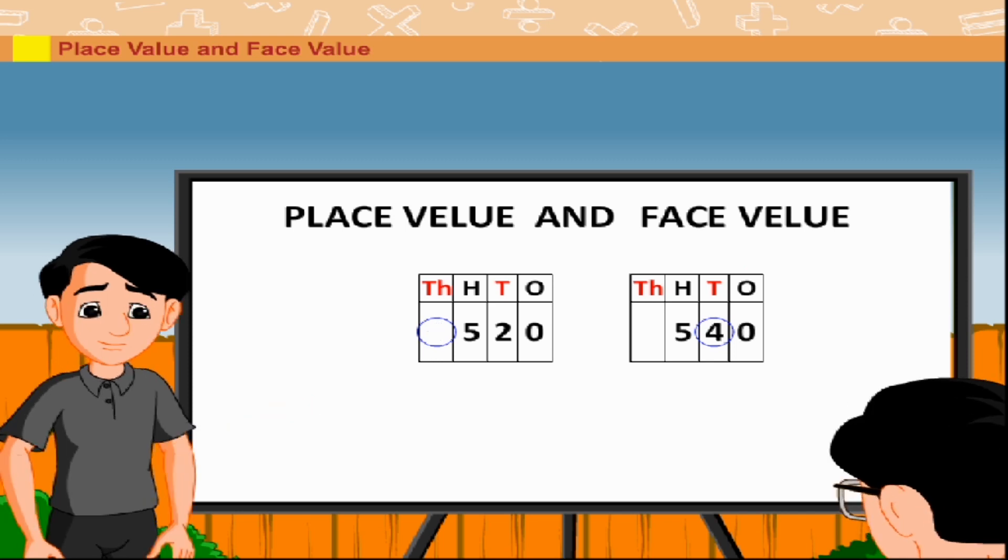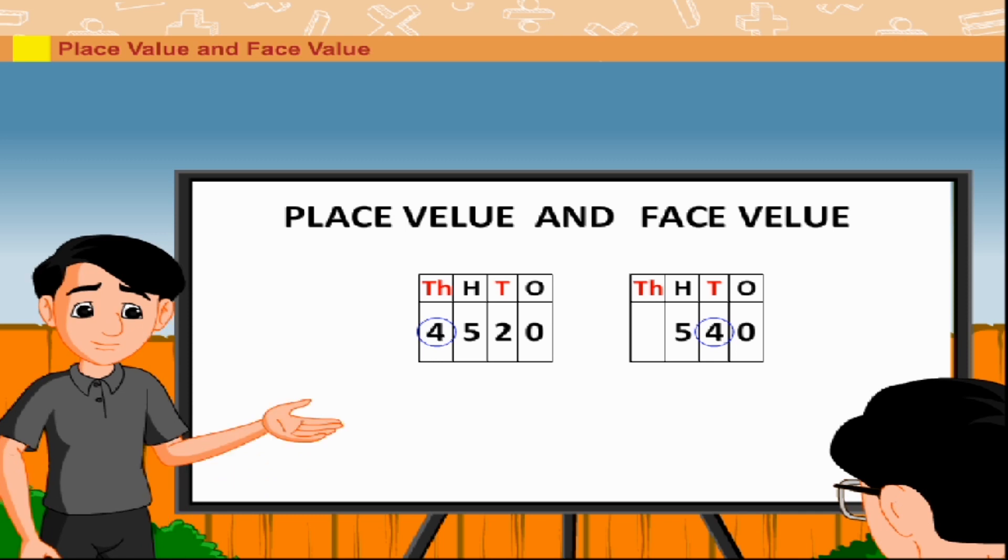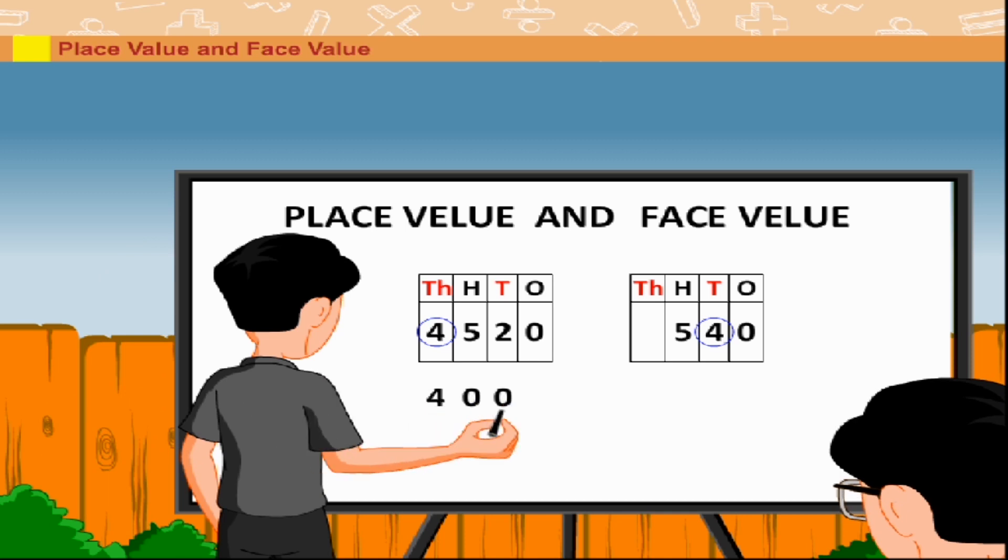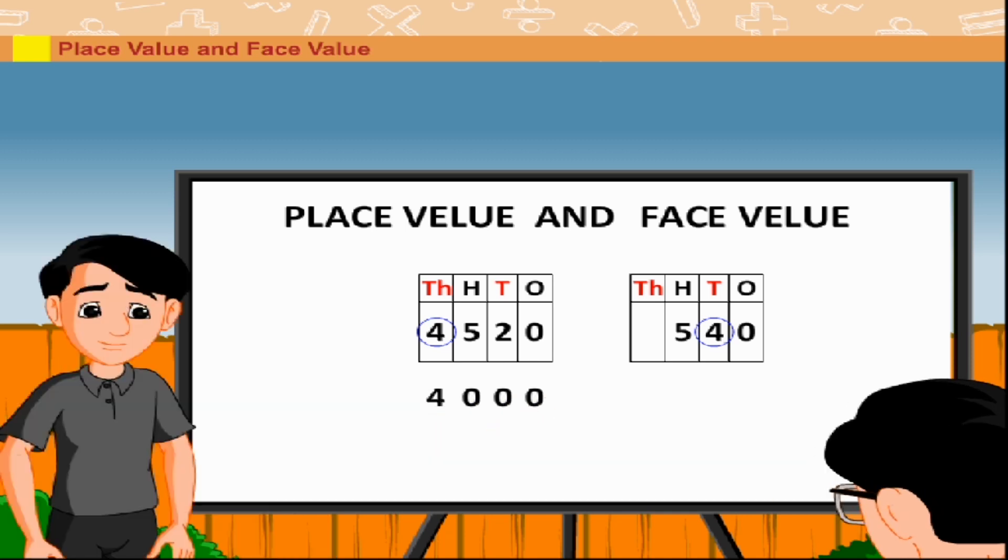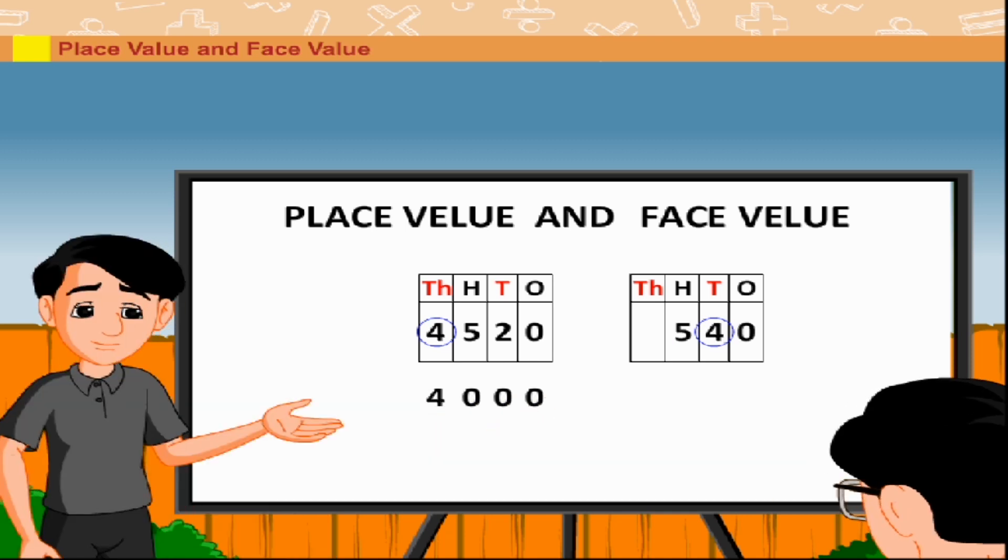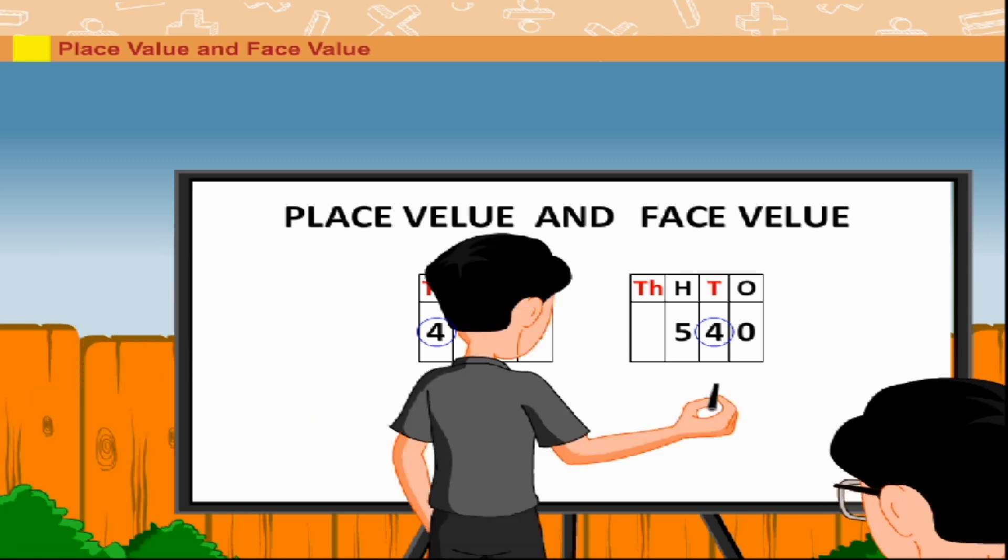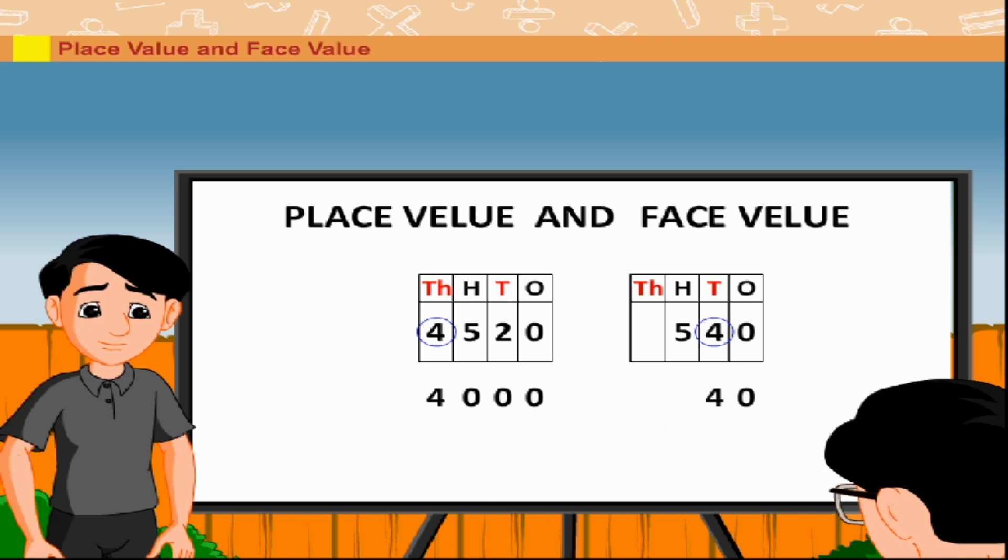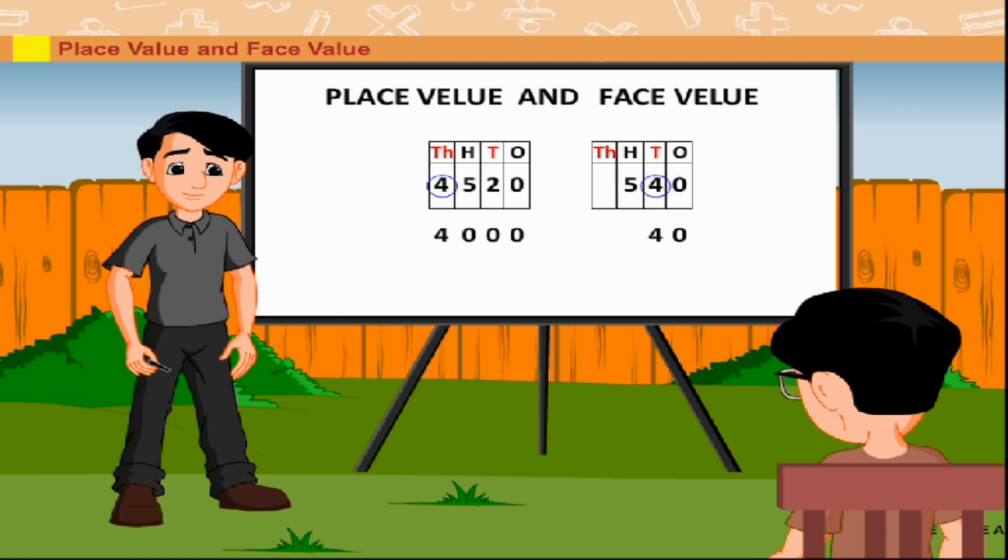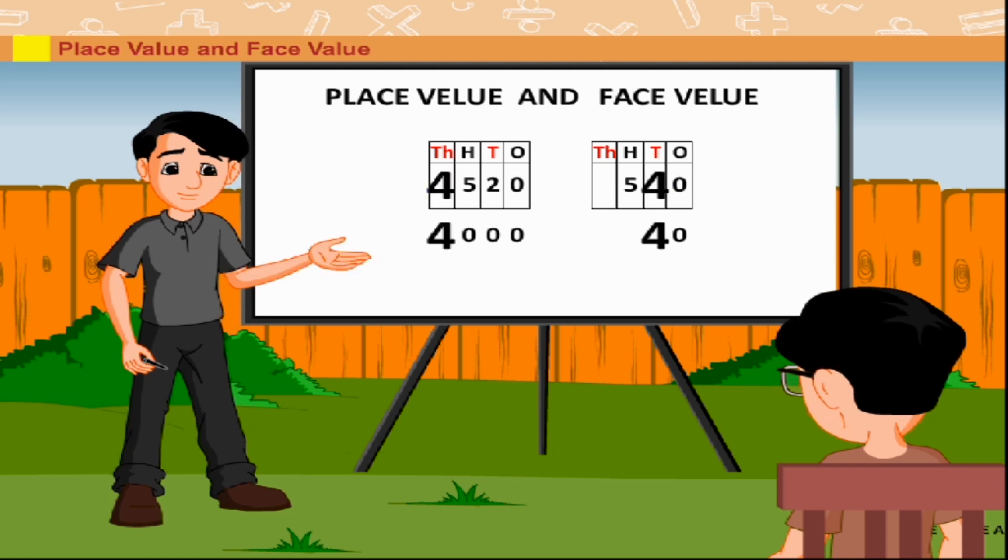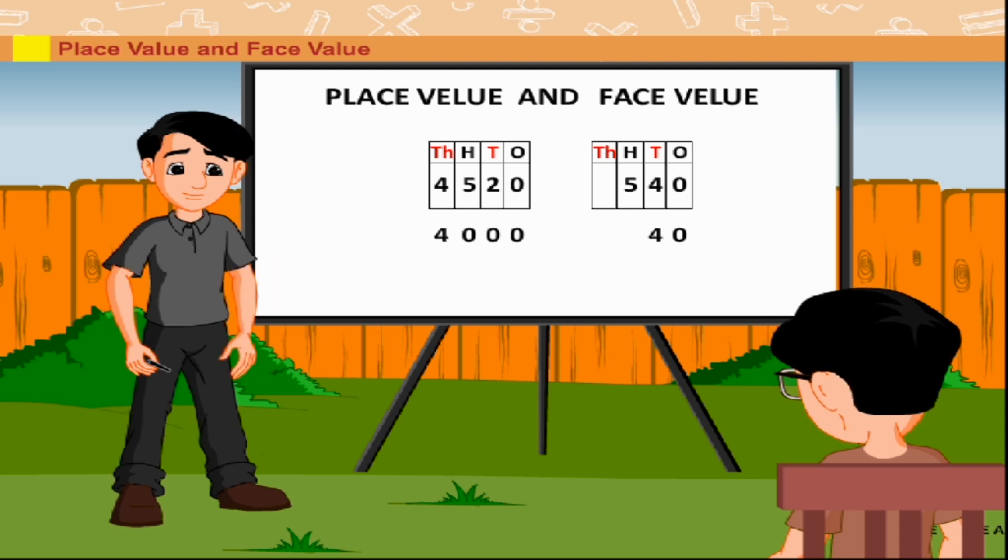the value of 4 in 4520 is 4000 and in 540 it is 4 tens, that is 40. The face value of a digit in a number is the digit itself, which means the face value of digit 4 in both the numbers is same, that is 4.